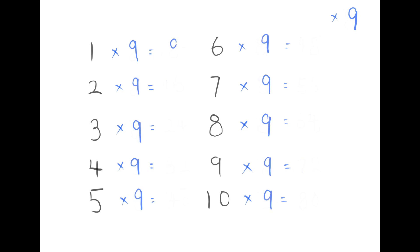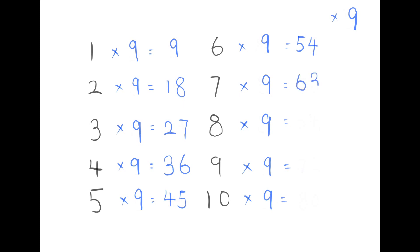1×9 is 9, 2×9 is 18, 3×9 is 27, 4×9 is 36, 5×9 is 45, 6×9 is 54, 7×9 is 63, 8×9 is 72, 9×9 is 81, 10×9 is 90.